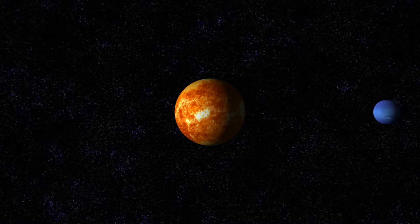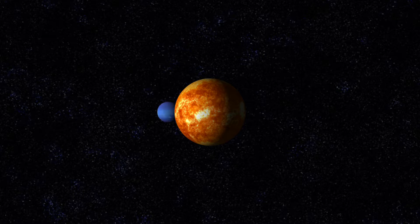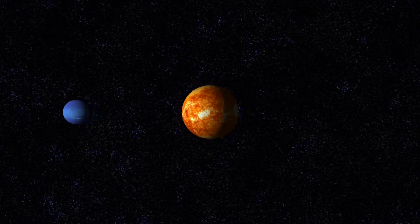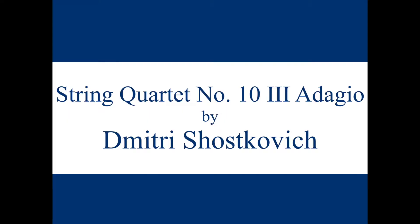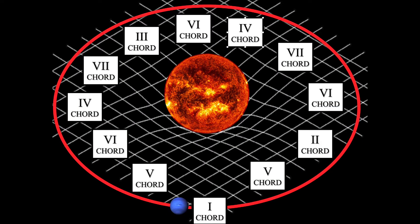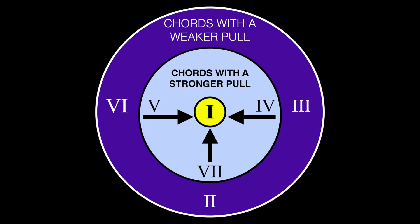Now we are traveling to the outer edge of our solar system. Neptune is so far away from the Sun's gravitational force that it takes 165 years to orbit one time around the Sun — that is slow! In this piece by Shostakovich, we hear a very long chord cycle with many chords that do not have a strong pull back to the I chord. Notice how Shostakovich uses chords like the II, III, and VI chords to create less gravitational pull.